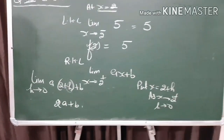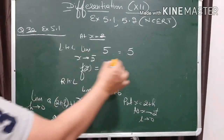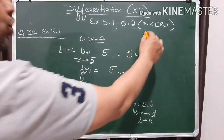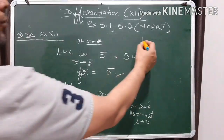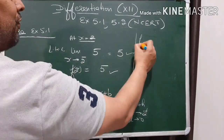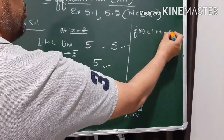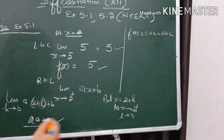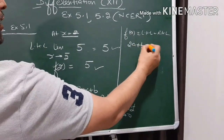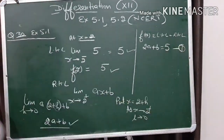As the function is continuous at both these points, the left hand limit, right hand limit, and f of 2 are all equal. We know that if a function is continuous then f(a) equals the left hand limit equals the right hand limit. So from here we get our first equation: 2a plus b equals 5.